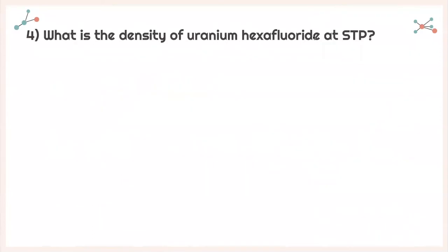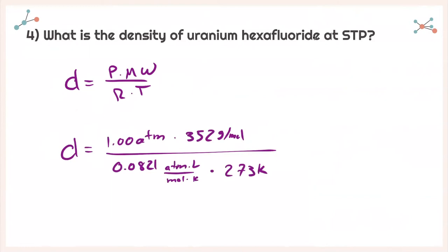For question 4, it asks: what is the density of uranium hexafluoride at standard temperature and pressure? Using the same equation — density equals pressure times molecular weight divided by R times temperature — with 1.00 atmosphere, the molecular mass of uranium hexafluoride, our R value, and 273 Kelvin, plugging all that into our calculator we get a density of 15.7 grams per liter.